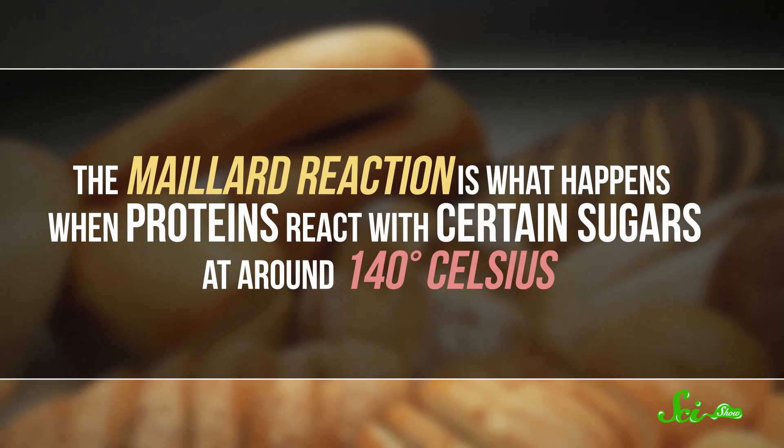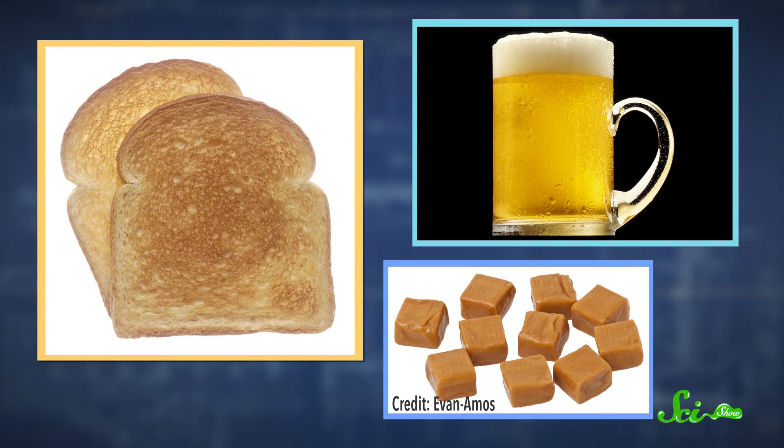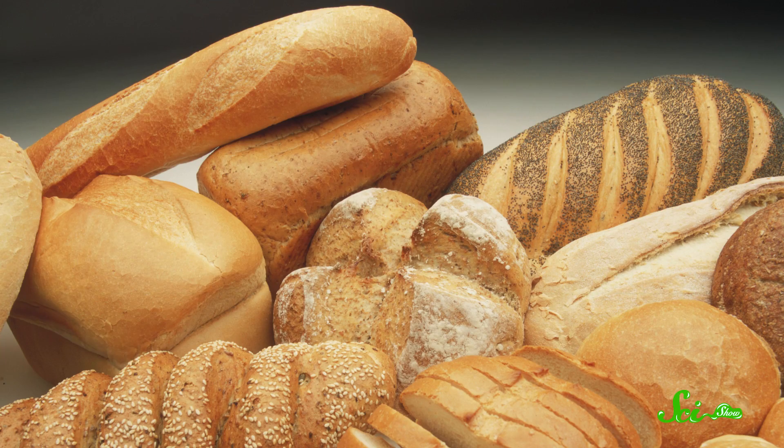The Maillard reaction is what happens when proteins react with certain sugars at around 140 degrees Celsius. The reaction can form all kinds of different products, depending on the proteins and sugars involved. But generally, it's what makes bread develop a crust, and cooked food turn brown. It's also usually considered something that makes food extra delicious.